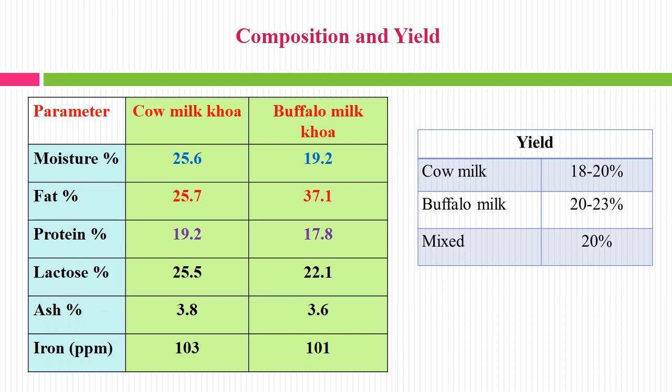In the right side table we can see the yield: from cow milk we can get 18 to 20% yield of Khoa, and from buffalo milk it is a little more because of the higher total solid — 20 to 23%. When mixed it could be around 20% yield.